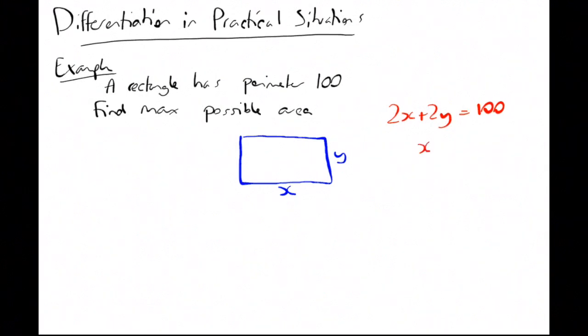Simplify that down to x + y = 50, and then we can write y in terms of x, so y = 50 - x.